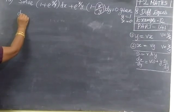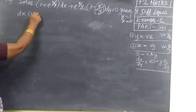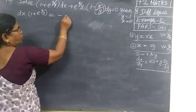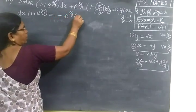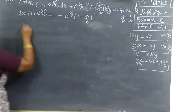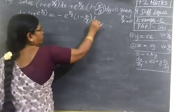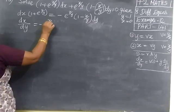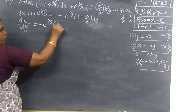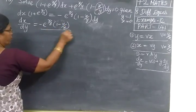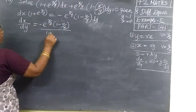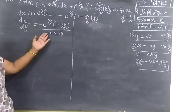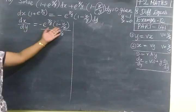Rewriting: dy times (1 plus e power x by y) equal to the other side, so take to that side, minus over there. So e power x by y times (1 minus x by y). Now dx by dy equal to minus e power x by y times (1 minus x by y) divided by (1 plus e power x by y). If you want to check it, just cross multiply and see: dx into (1 plus e power x by y), dy into this one.